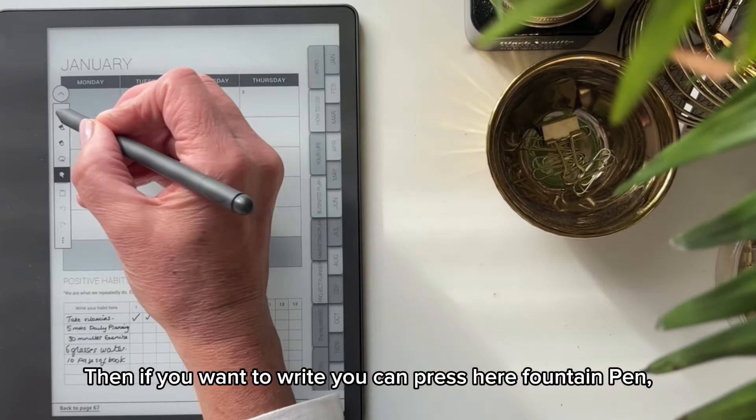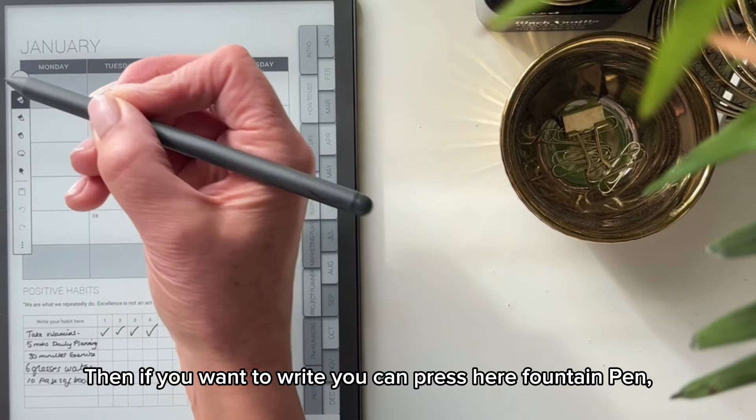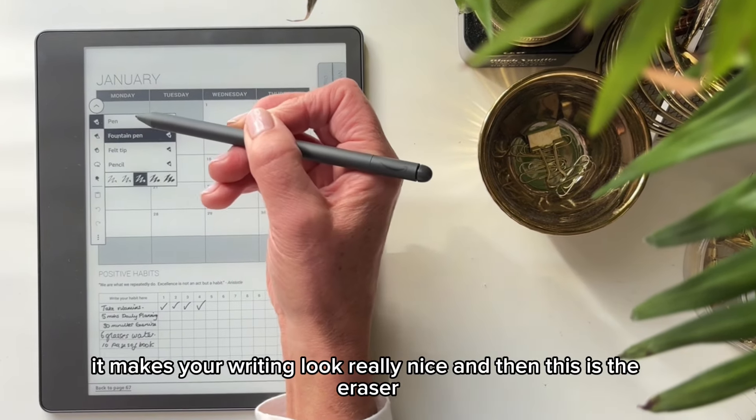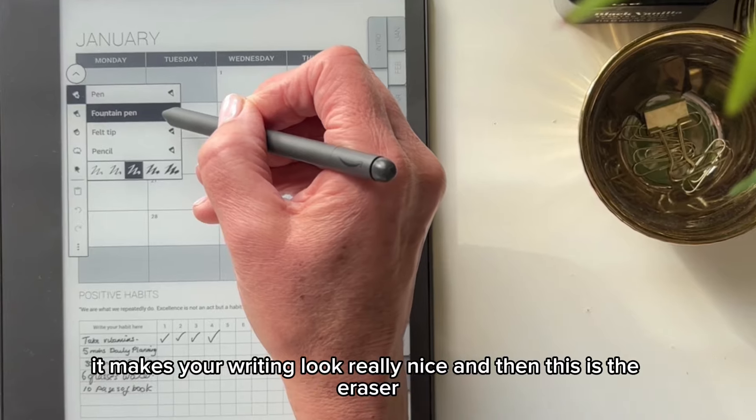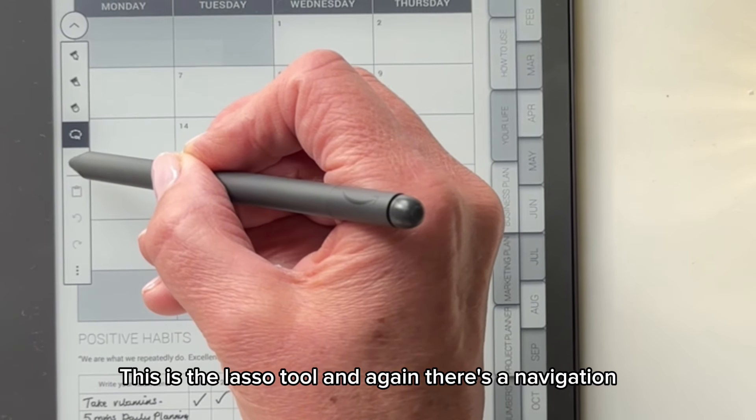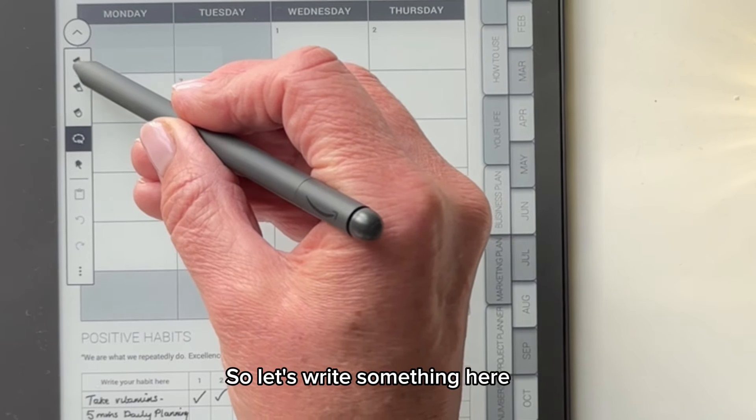Then if you want to write, you can press here. Fountain pen, felt tip, pencil. I really like the fountain pen. It makes your writing look really nice. And then this is the eraser. This is the lasso tool. And again, there's the navigation. So let's write something here.